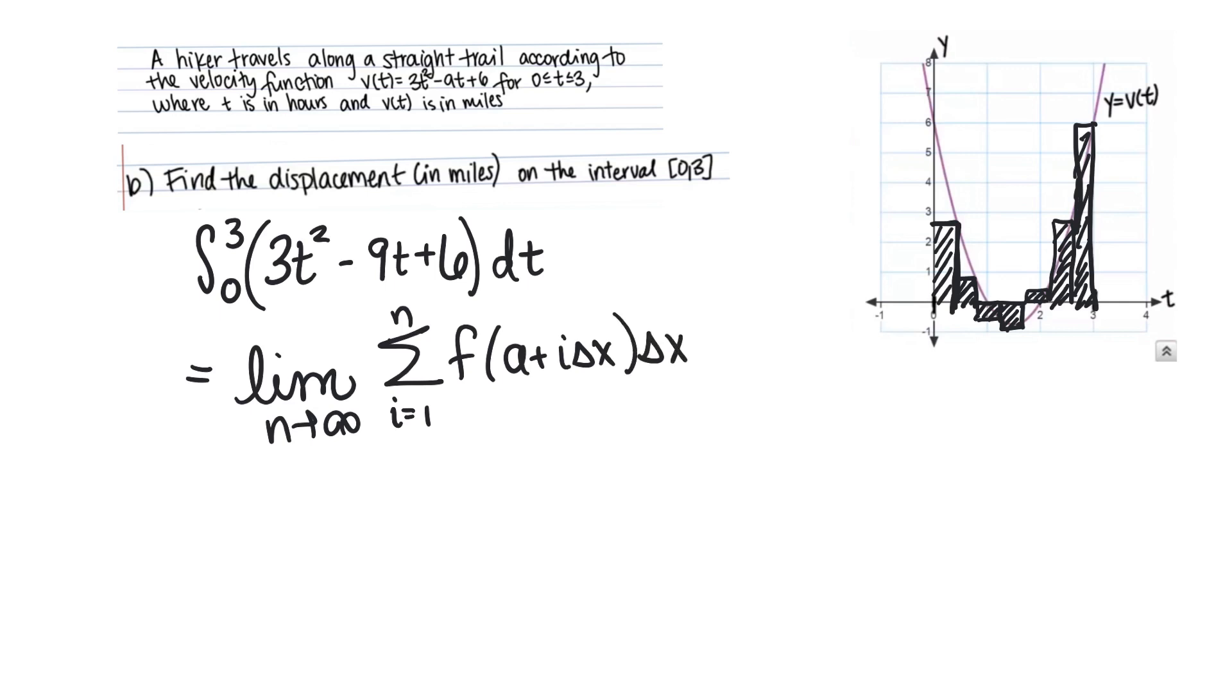So in this particular case we'll be looking at f of our a value is 0 and our delta x is going to be b minus a over n which is 3 minus 0 over n, so 3 over n. This is 3i over n and then the delta x here is 3 over n.